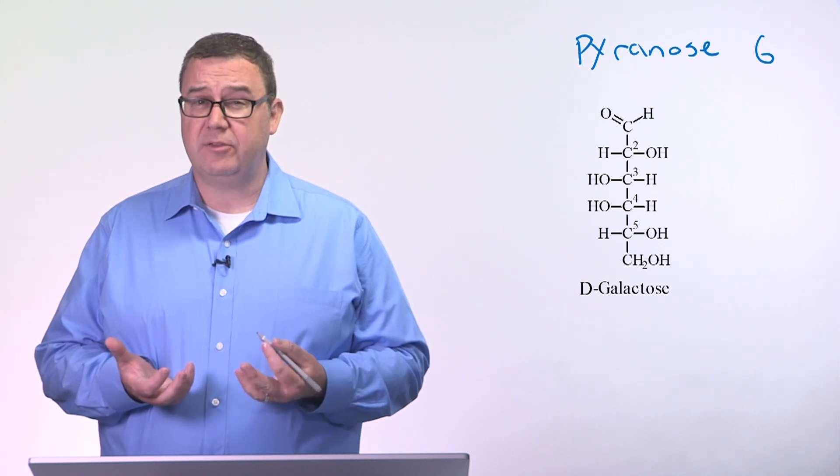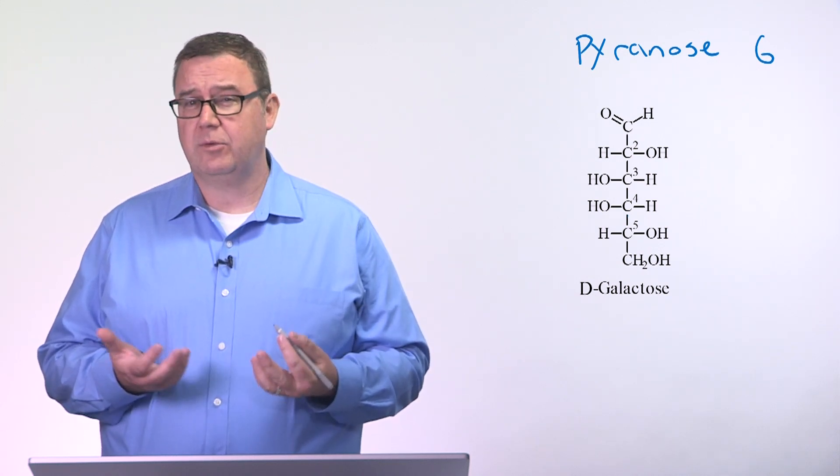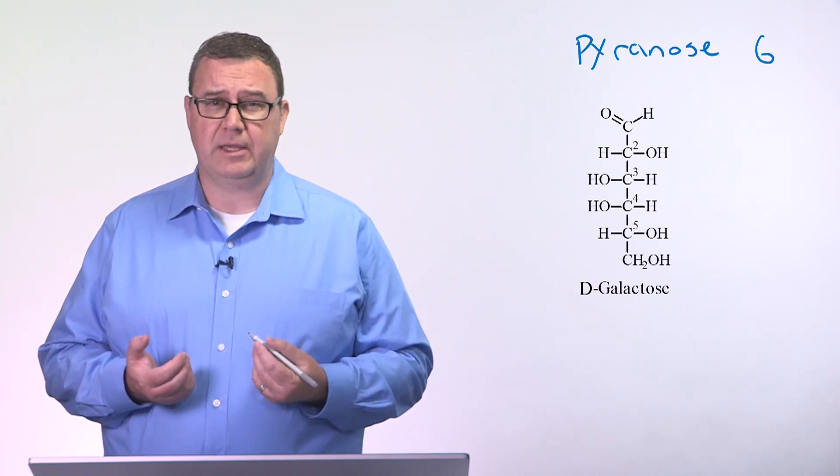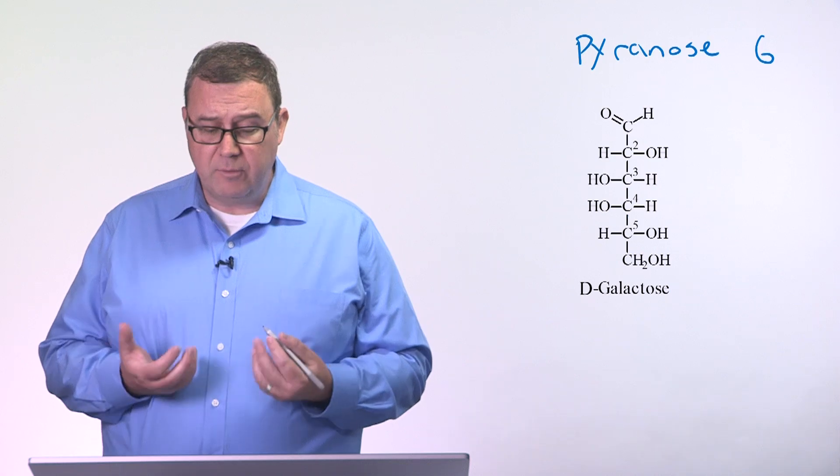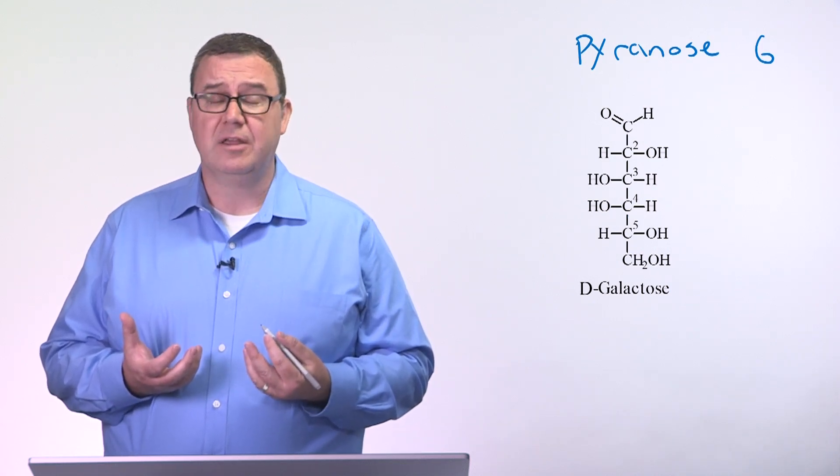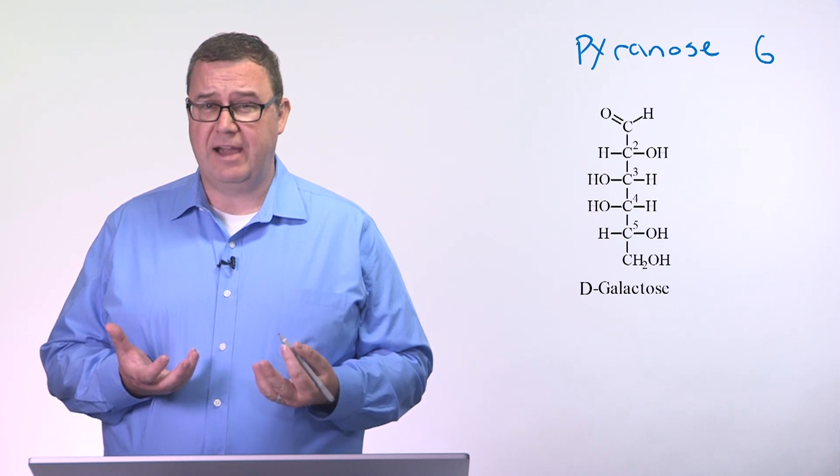Please recall that these structures are going to form either hemiacetals or hemiketals. In this case, we have an aldehyde, so we'll form a hemiacetal. If we form a hemiacetal and one of those members has to be an oxygen, that means five of them have to be carbons.